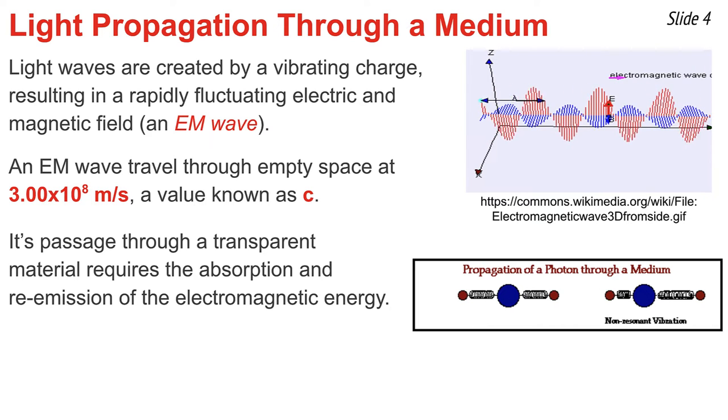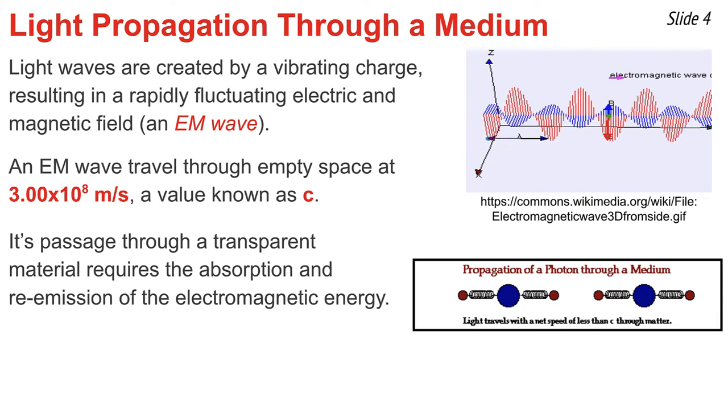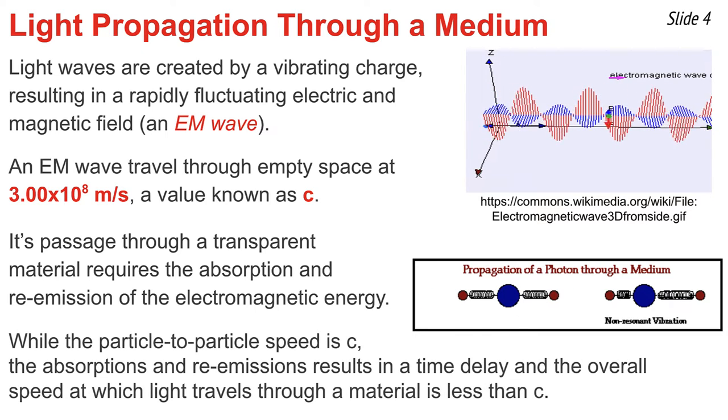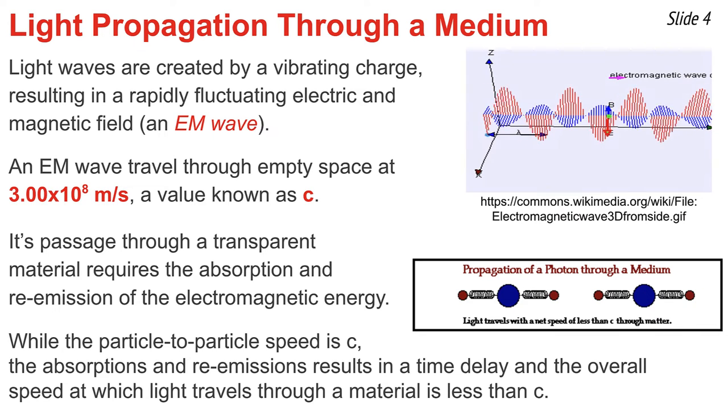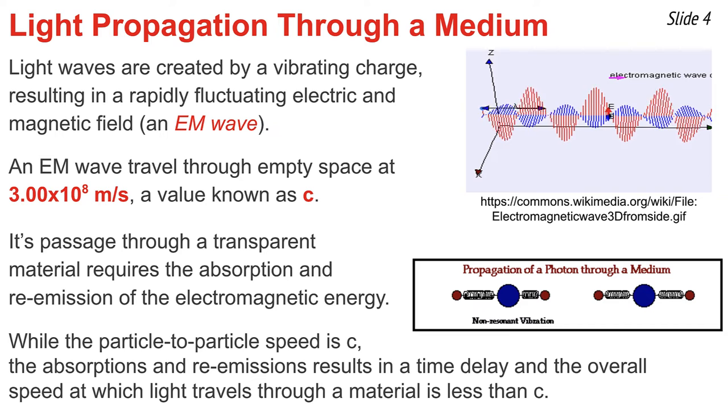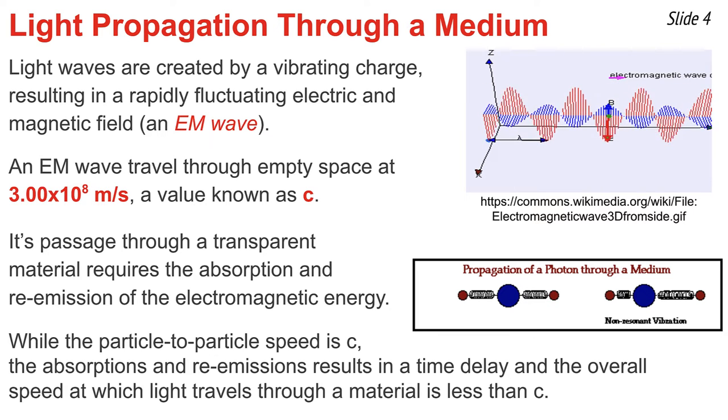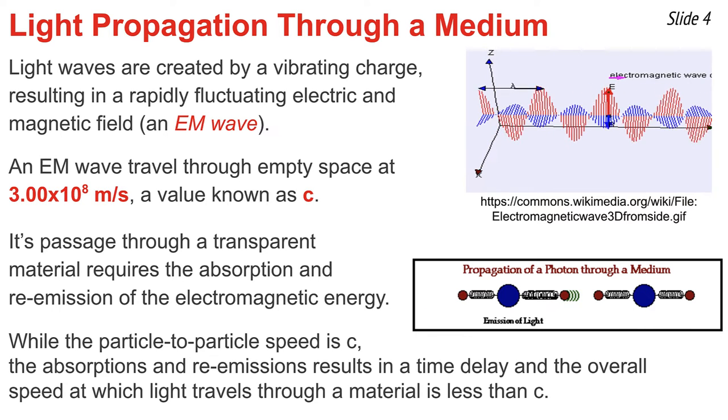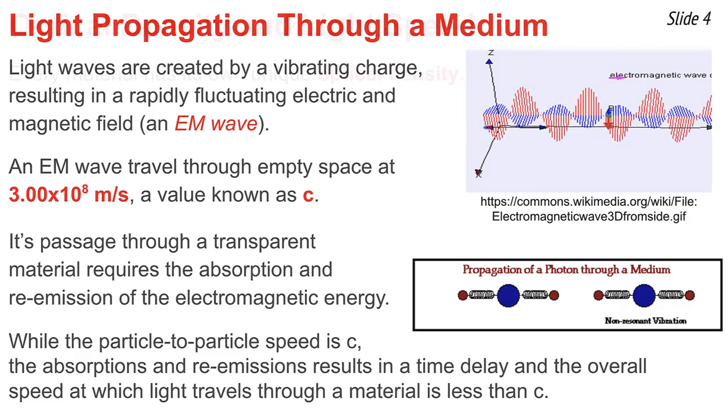This process of being absorbed and re-emitted continues from particle to particle as the light wave makes its passage through that transparent material. It travels from particle to particle at 3.00 × 10⁸ m/s, but the absorption and re-emission result in a small time delay, causing the overall speed through a transparent material to be less than c.